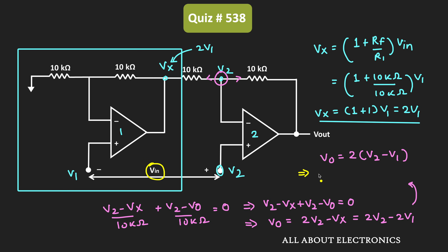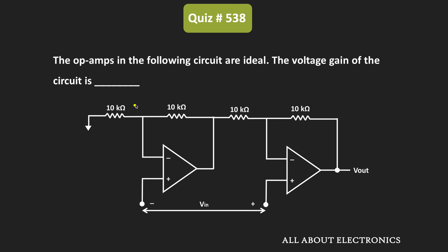From this, Vout equals 2 times (V2 minus V1), and since V2 minus V1 is the input voltage, we can say Vout divided by Vin equals 2. Therefore, for the given circuit, the voltage gain is equal to 2.